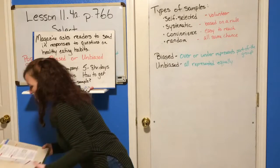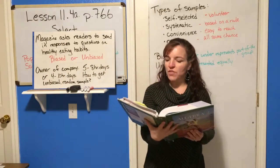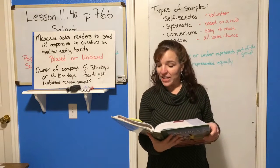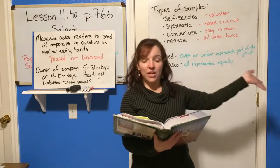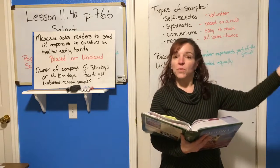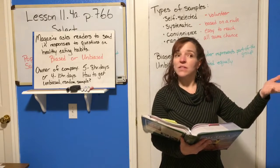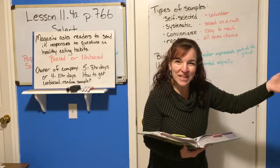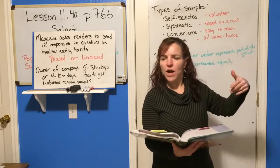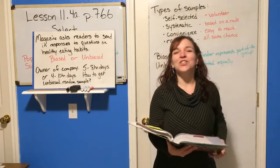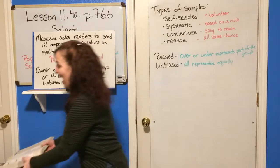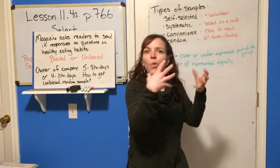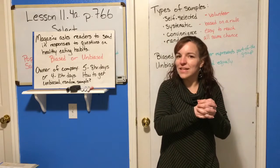Another example: if the manager of a concert hall wants to know how often people in the community attend concerts, and the manager asks 50 people standing in line for a concert — is that biased or unbiased? If he's asking people in line for a concert, those people are more likely to want more concerts and be more interested in them. So his sample is definitely going to be biased because he's going to the specific set of people most likely to give a particular answer.